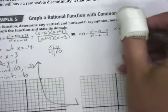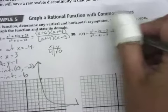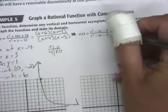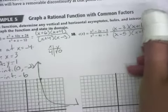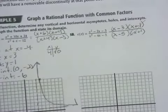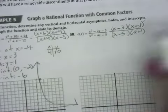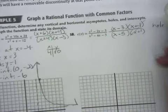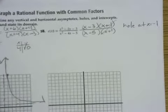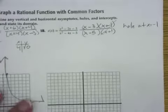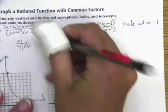Start off the next example the same way. Start by factoring. So, X minus 3 times X plus 1 over X minus 5 times X plus 1. And these guys cancel out. So, I know there will be a hole at X equals negative 1.